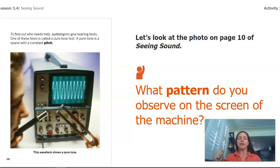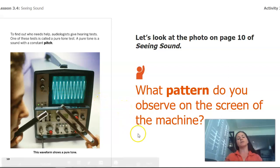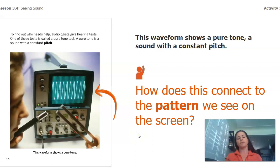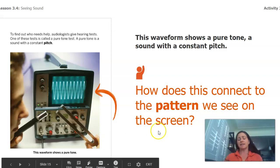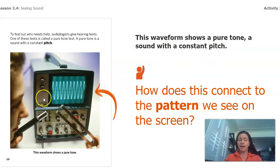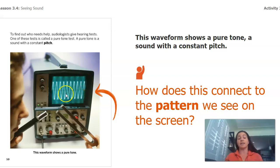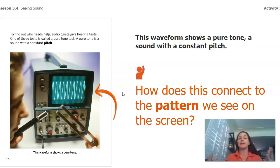So let's actually look back at the reading. We're going to look at a photo that was on page 10. I want you to think about what pattern do you observe on the screen. Now, that waveform shows a pure tone — that's a sound with a constant pitch, the same pitch the whole time. And how does that connect to the pattern we see on the screen? Well, a constant pitch has the same wavelength. I see the same wavelength and actually the same amplitude. So the pattern I see is that all the waves look the same, which makes sense because the sound stays the same.